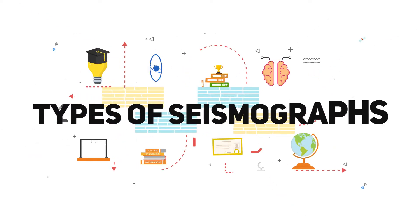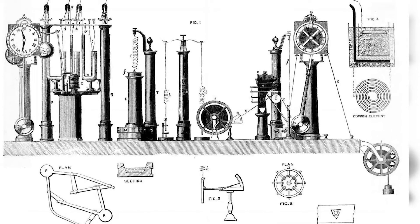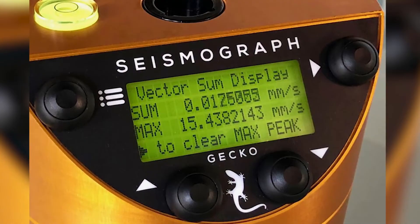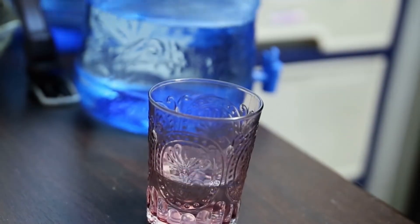Types of seismographs: Seismographs come in different types. Short-period seismographs pick up the high-frequency seismic waves of local earthquakes, while long-period seismographs measure the lower frequency waves of more distant earthquakes.